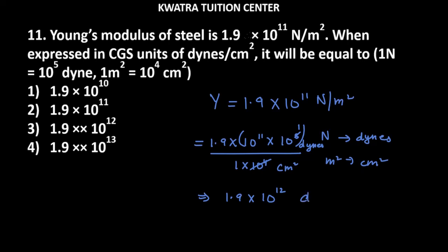Your answer is 1.9 × 10^12 dynes over centimeter square. So the right option out of these is the third one.